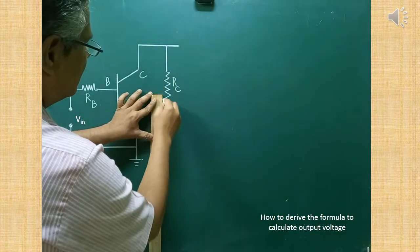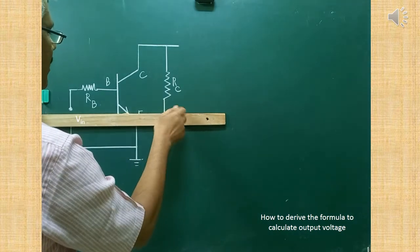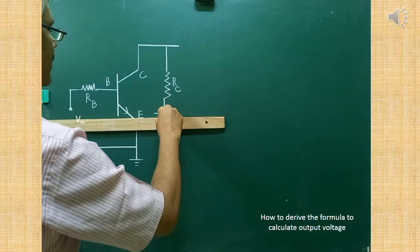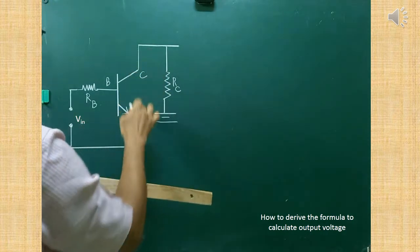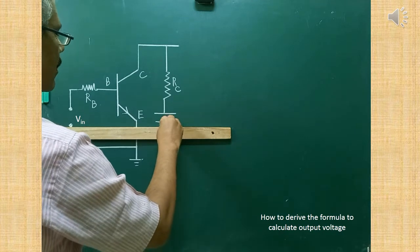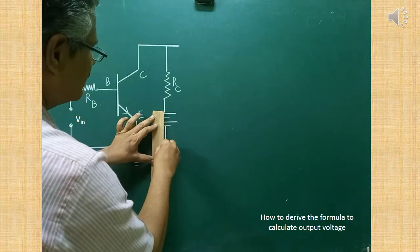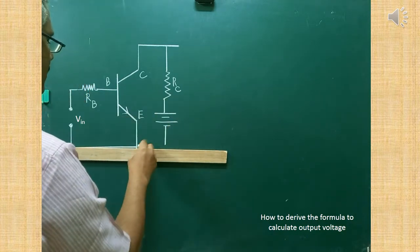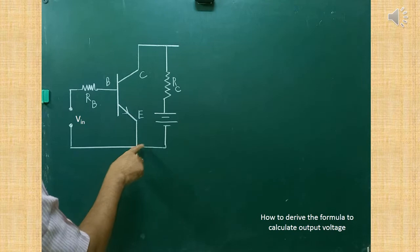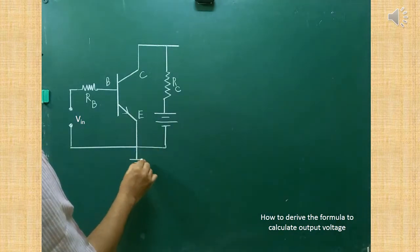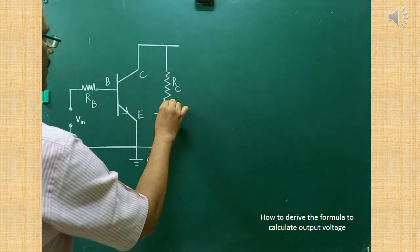After that, the power supply. The entire circuit has to work, so a power supply must be given. The power supply is connected across the collector and emitter, and this is called VCC. Since the negative terminal is connected here, we can call it earthing. This terminal is taken as positive and this terminal as negative.